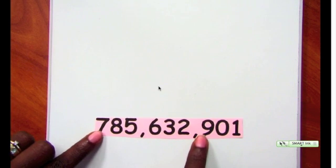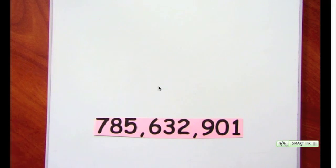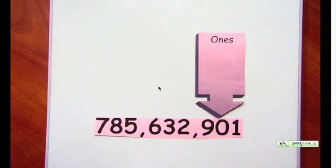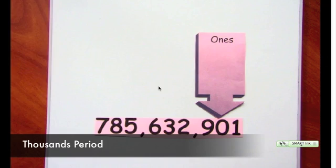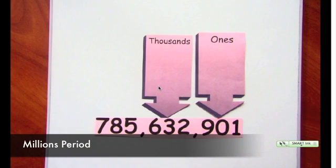We are going to talk about place value in three distinct periods when we are working with large numbers. Let's take this number for example — 785,632,901. This large number has three distinct periods: the ones period, the thousands period, and the millions period.